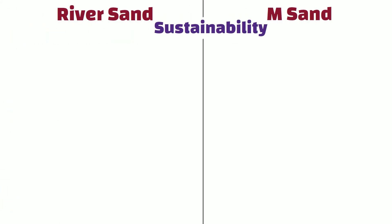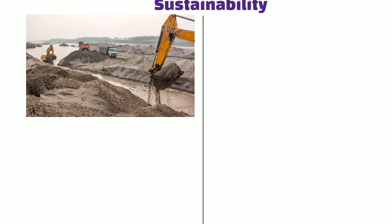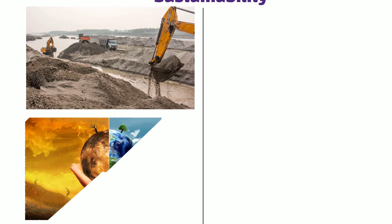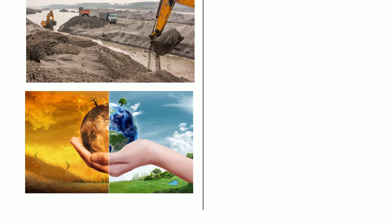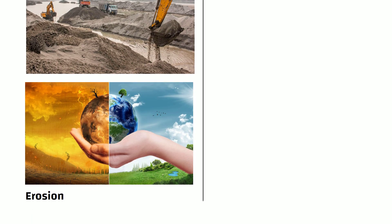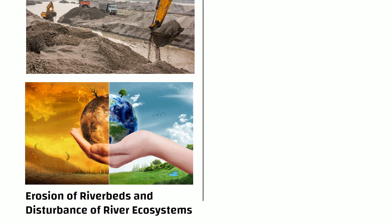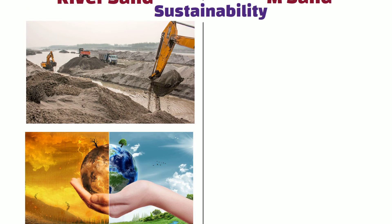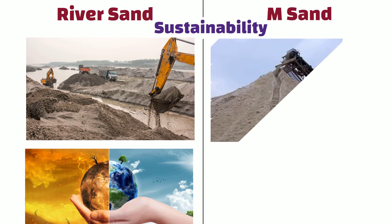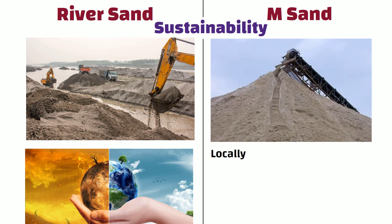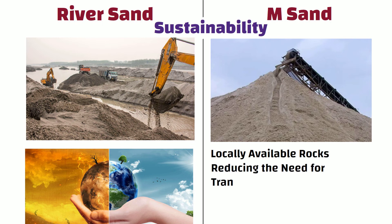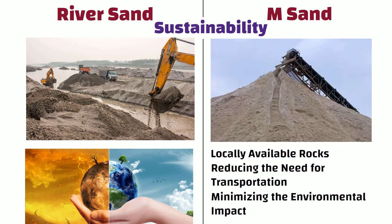Sustainability: The extraction of river sand can have a significant impact on the environment, such as erosion of river beds and the disturbance of river ecosystems. On the other hand, manufactured sand can be produced from locally available rocks, reducing the need for transportation and minimizing the environmental impact.